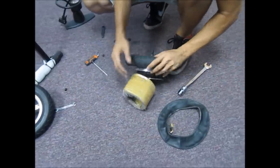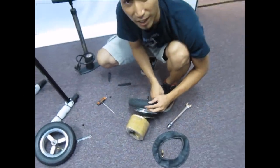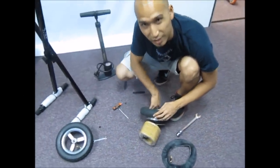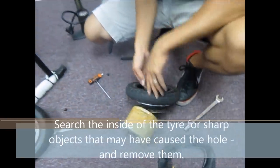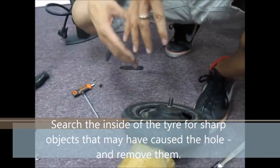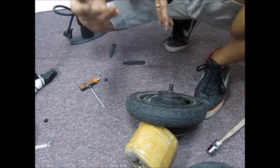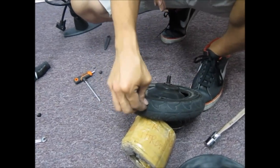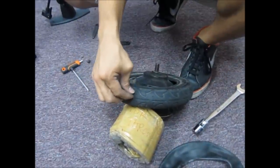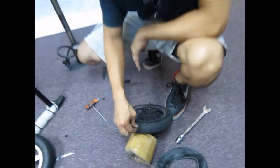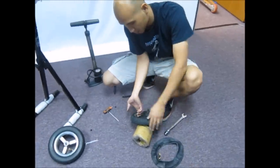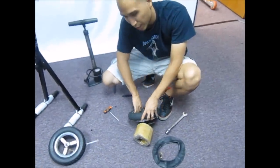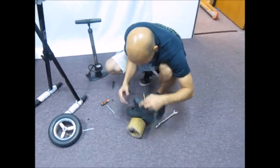Now check the inside of the tire for any sharp objects. That's really important. You don't want to go through the whole process of changing the tube and then replacing a new tube and then have the same puncture because the sharp object is still stuck on it. It can be a stapler, it can be a nail, it can be anything, it can be a pebble. So make sure the sharp object is removed before you put the new tube in.